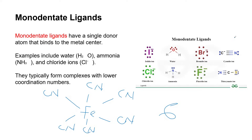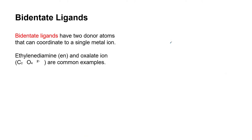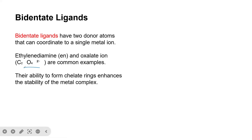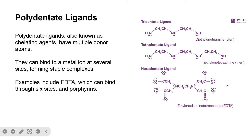Bidentate ligands donate two lone pairs of electrons and can coordinate to a single metal ion through two atoms. Examples include oxalate and ethylenediamine. The ability to form chelate rings enhances the stability of the metal complex. Other examples of bidentate ligands include phenanthroline.